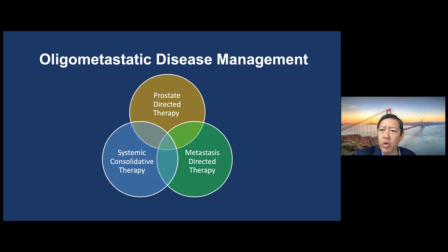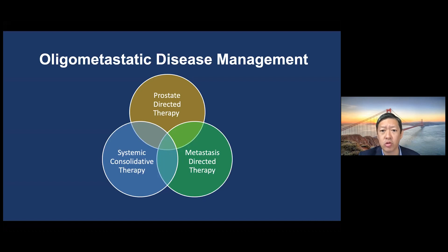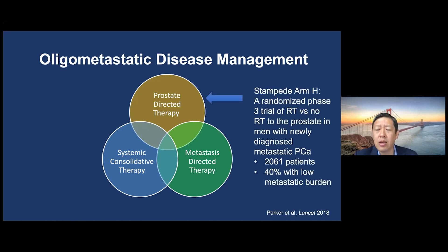This leads to a three-pronged approach for managing oligometastatic prostate cancer. First, treatments directed at the prostate itself — either surgery or radiation. Second, metastasis-directed therapy, using radiation or surgical removal to treat areas of metastasis. Third, systemic therapy, specifically next-generation androgen signaling inhibitors.